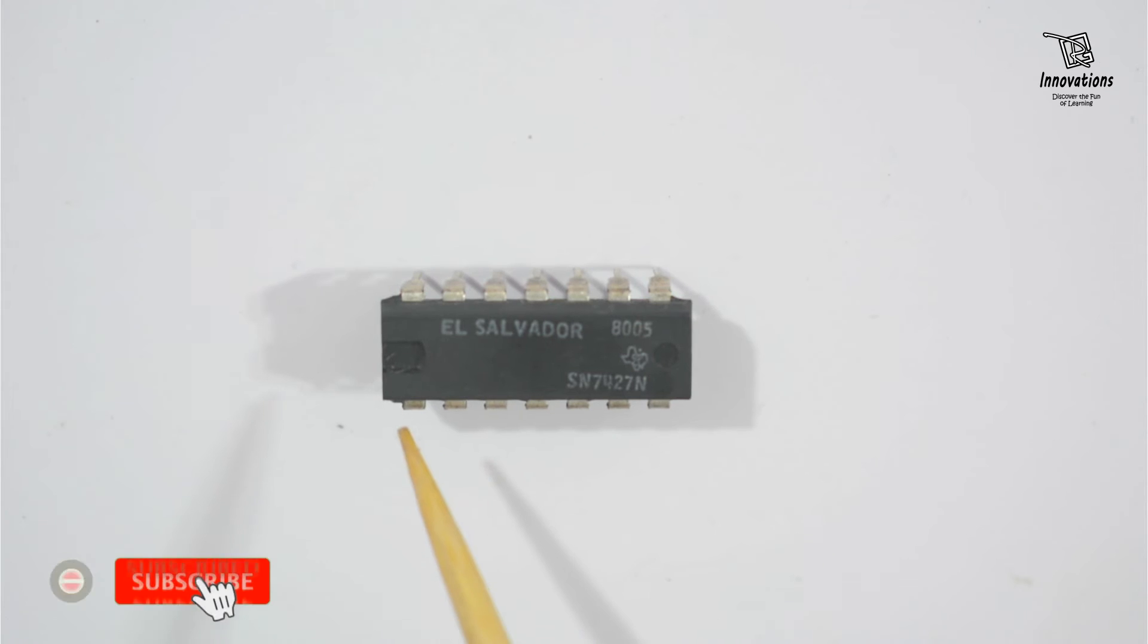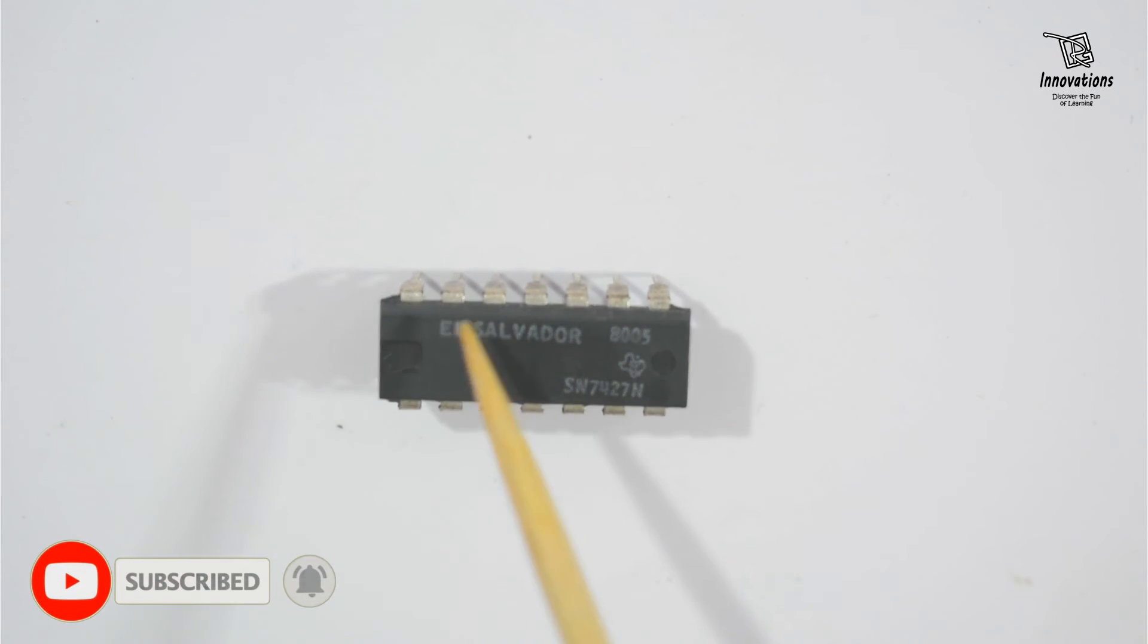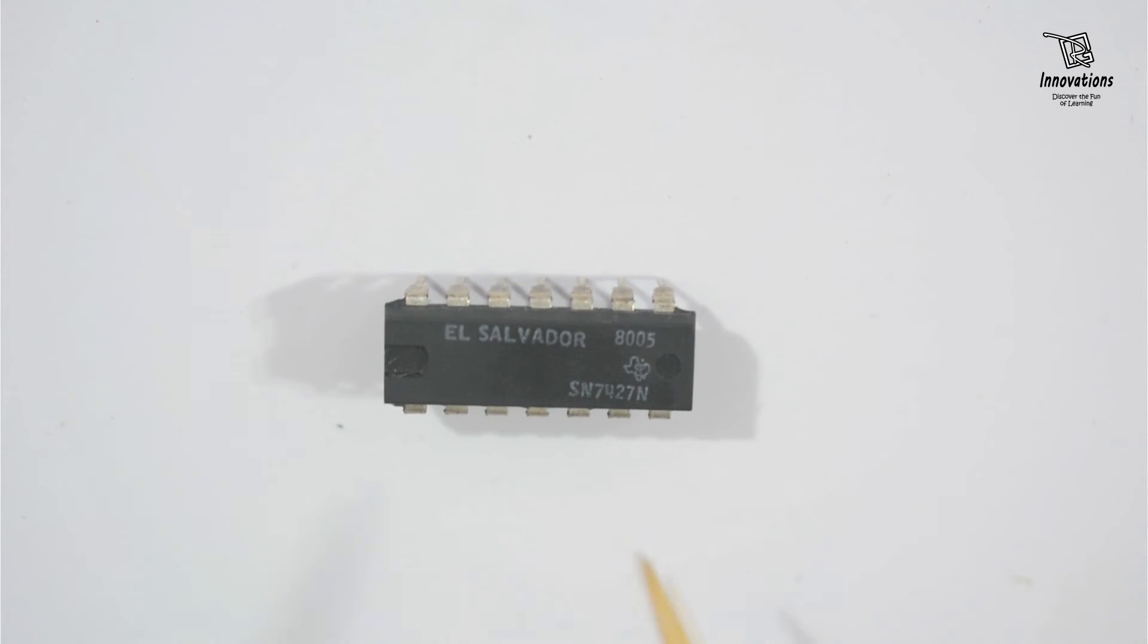This is the notch here, and from the left side of the notch this is pin number 1 to pin number 7 and pin number 8 to pin number 14. Pin number 14 is the positive power supply pin. Pin number 7 is the negative power supply pin. And we will check only one segment of the IC, that is pin number 3, 4, 5 input and 6 output.